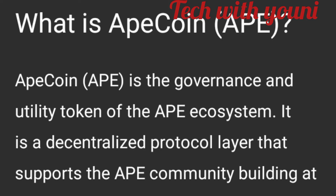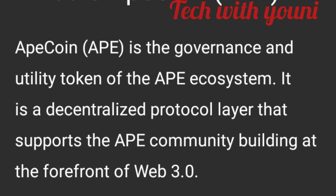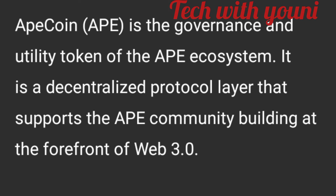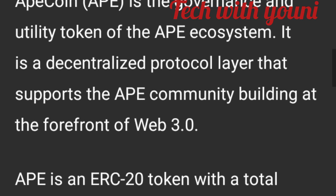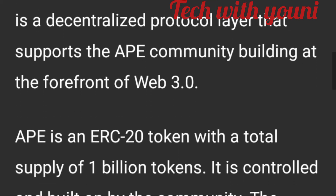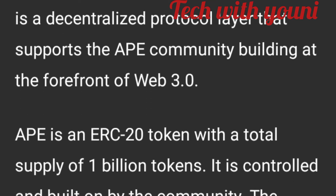APE coin is the governance and utility token of the APE ecosystem. It is a decentralized protocol layer that supports the APE community building at the forefront of Web 3.0. APE is an ERC-20 token with a total supply of 1 billion tokens. It's controlled and built on by the community. The APE coin DAO is a decentralized organization that allows all APE holders to vote on decisions related to the token.